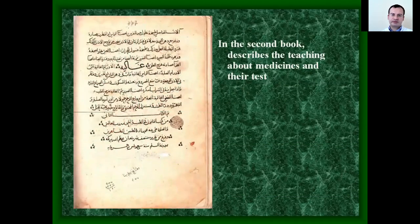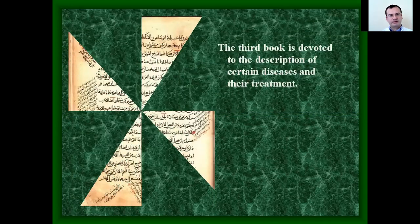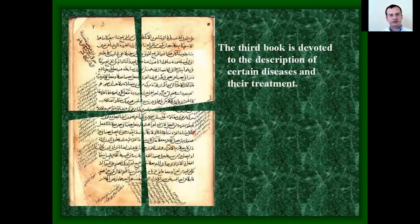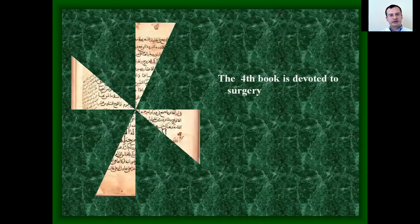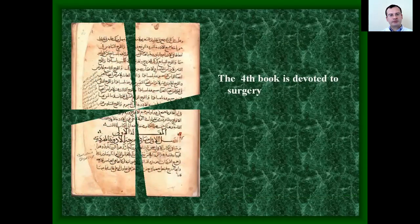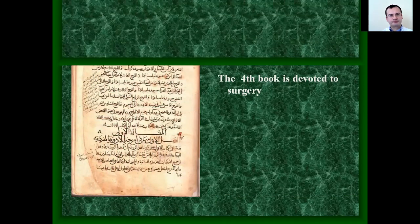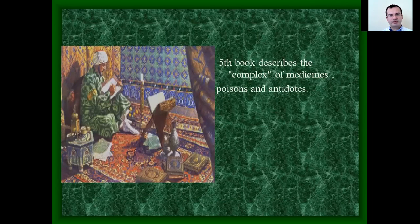The second book of the Canon described the teaching about medicines and their testing. The third book was devoted to the description of certain diseases and their treatment. The fourth book was devoted to surgery. And the fifth book described complex medicines, poisons, and antidotes.